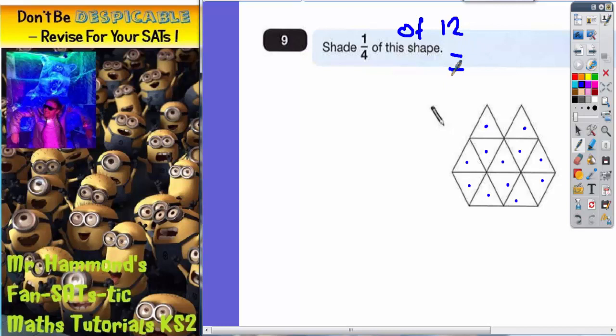To find a quarter of anything, you halve it and then halve it again. So half of 12 is 6, half it again is 3. So a quarter of 12 is 3 triangles, and what that means is we can shade in any three triangles.